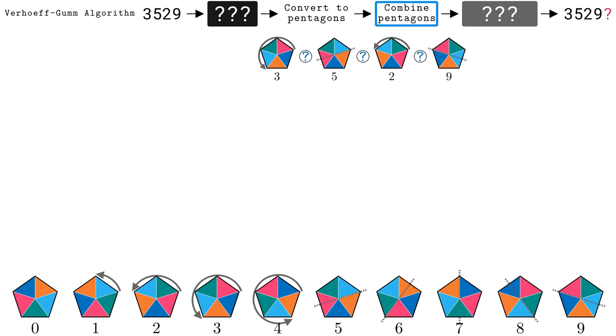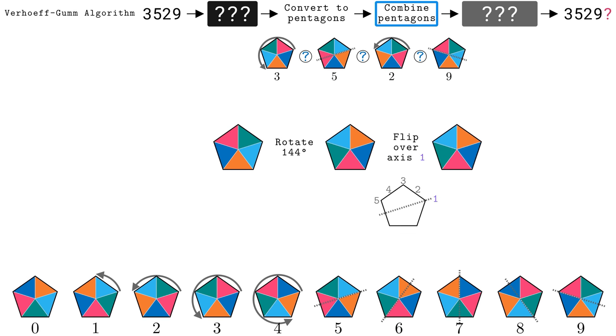To answer that question, consider the following chain of operations. Take pentagon 9, rotate it by 144 degrees, and then flip it over axis 1. We could make up some notation for this, using p to represent a specific pentagon, an r function to rotate, and an f function for flipping. The chain of operations results in the pentagon corresponding to digit 4, or p4 for short.